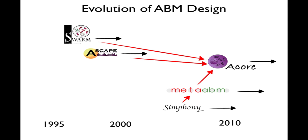I wanted to briefly look at the history of how we got to where we are. There have been a number of agent-based modeling tools over the years, starting with Swarm — the echo of its logo is in our logo — and Ascape, which I began developing in 1997, through 2003 or so.